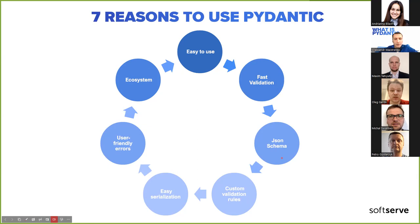Pydantic models can emit JSON Schema, allowing easy integration with other tools and automatic documentation. It also supports custom validation rules — if simple type hints or base Pydantic fields aren't enough, you can write your own validators for specific cases. Easy serialization: Pydantic seamlessly converts data into dicts and JSON, simplifying data exchange between different parts of your application or external systems, which is very useful for REST and other approaches.